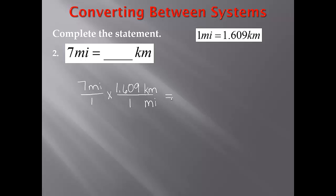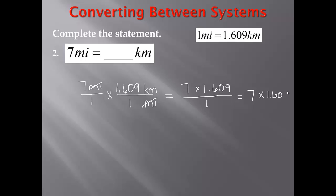Now I can go ahead and multiply this out. I have miles in the numerator of one fraction and miles in the denominator of the other, so those will cancel out. So now I need to multiply. I have 7 times 1.609, or 1 and 609 thousandths, in the numerator. The denominator would be 1 times 1, which is just 1, so this would be equal to 7 times 1.609.